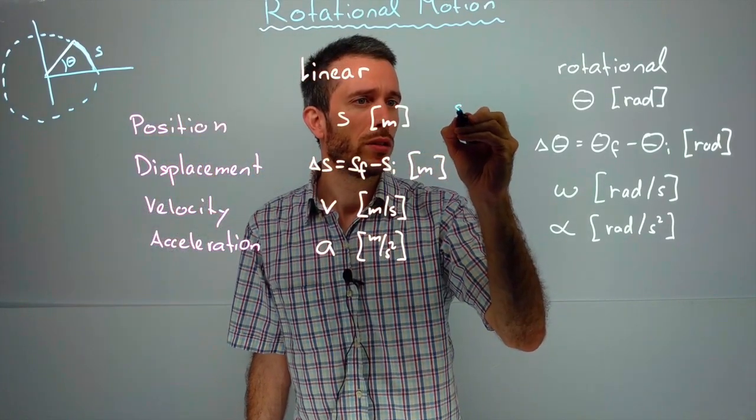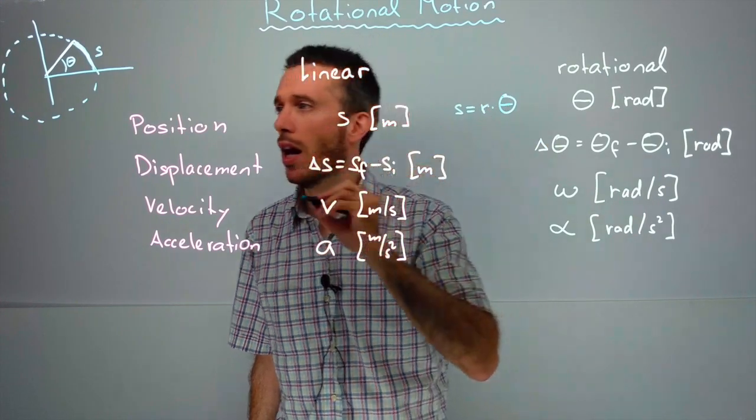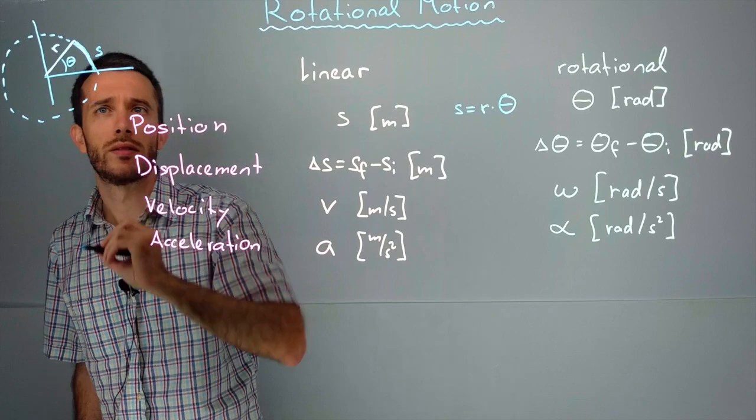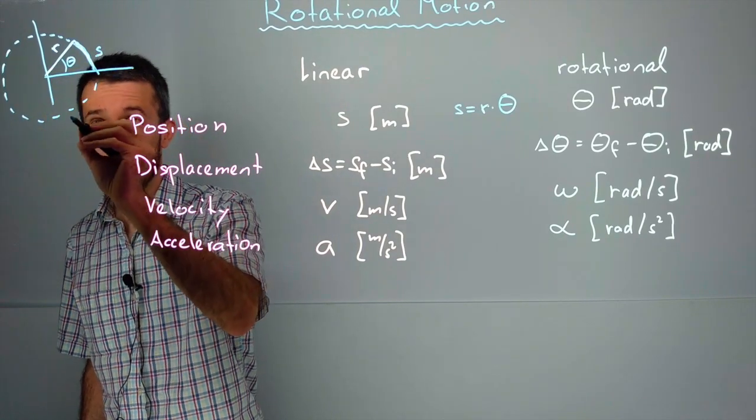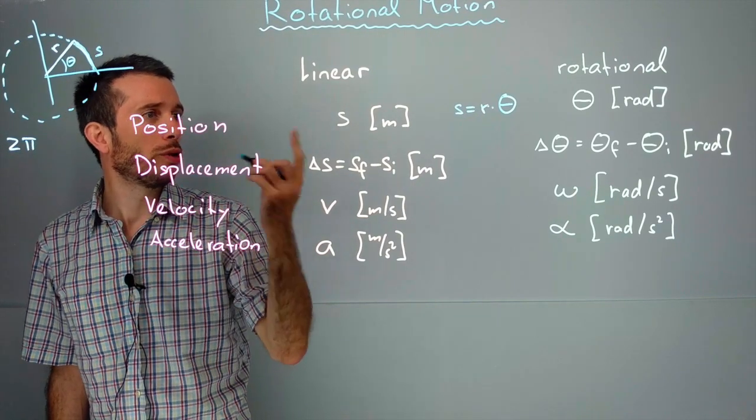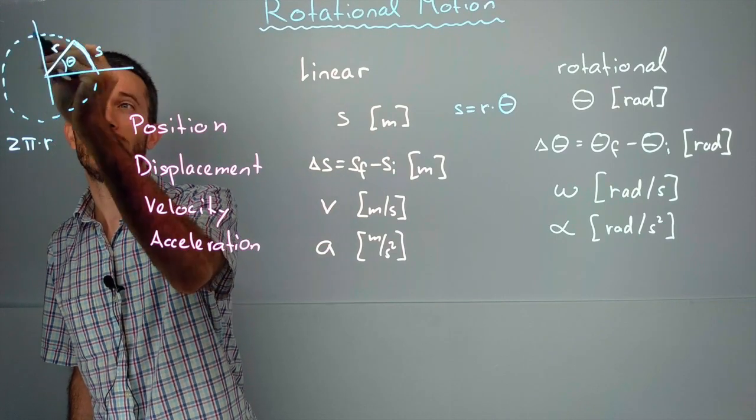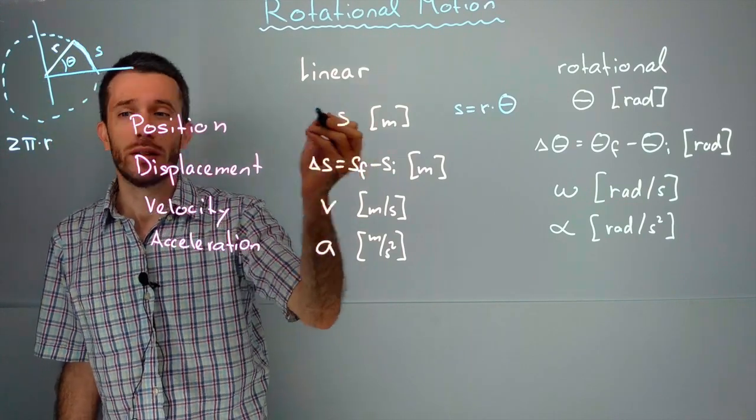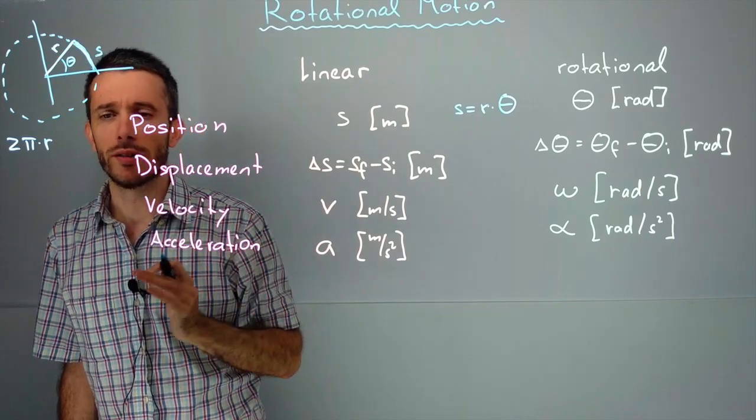The position is the radius times the angle in radians. If you think about it the angle is given in radians. So a full circle would be 2 pi. If I multiply the full circle with r, well what I get is the circumference, which would be the linear displacement along the circumference of the circle.